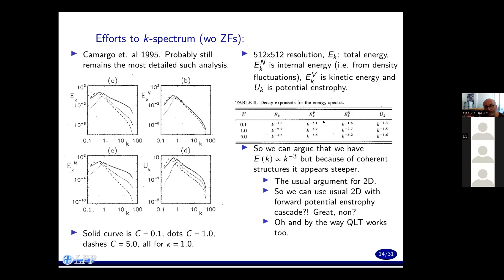We can argue that this is actually K to minus three, but because of coherent structures it appears steeper. This is the usual argument for 2D turbulence. This suggests we can actually use usual 2D turbulence with forward potential enstrophy cascade. And they look at quasi-linear theory — it works pretty well as well, at least for these parameters.